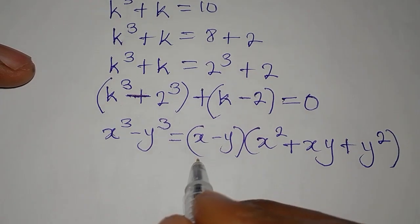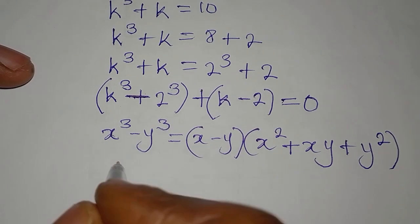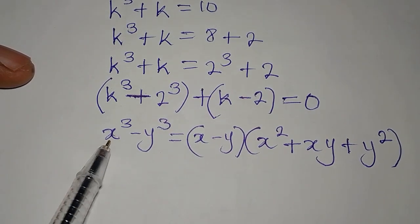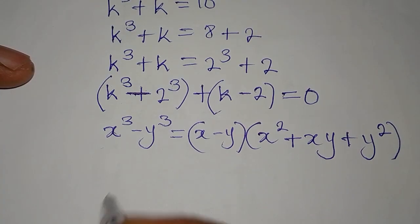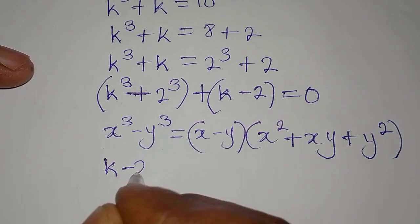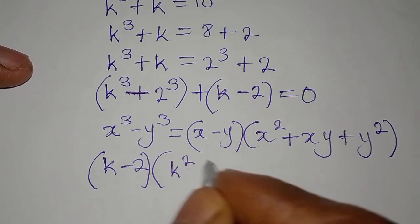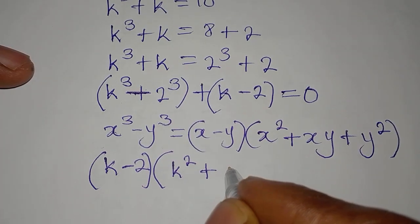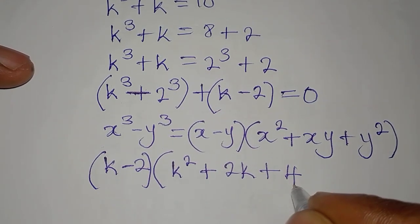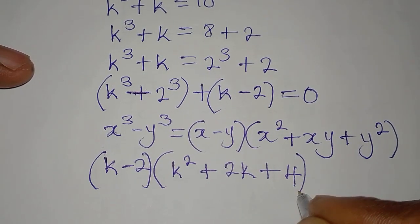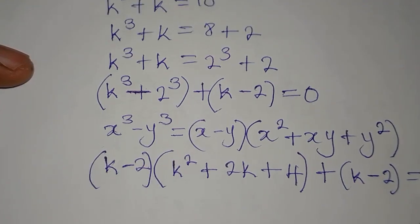And from here, we will now have x minus y to be k minus 2, because this k is x and 2 is y in this problem, in this expression. So k minus 2 is here, into x squared, that would be k squared, plus xy, that is 2k. Then plus y squared, which is 2 squared, and it's 4. Then we have plus, boom bracket, k minus 2. Everything is equal to 0.